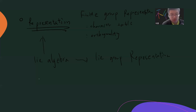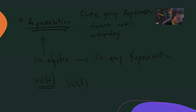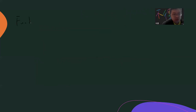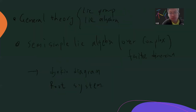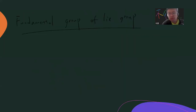A standard and famous example in quantum mechanics involves SU(2), and you can also talk about SU(3) and keep going. Finally, the last thing I want to talk about is standard results in algebraic topology — the fundamental group of the Lie group — and also the Weyl theorem and many related things.